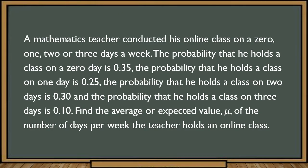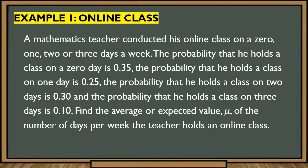Let's take Example 1, which is about online class. A mathematics teacher conducts online class on 0, 1, 2, or 3 days a week. The probability of holding class on 0 days is 0.35, on 1 day is 0.25, on 2 days is 0.30, and on 3 days is 0.10. We are going to find the average, or expected value — which is also the mean — of the number of days per week the teacher holds an online class.